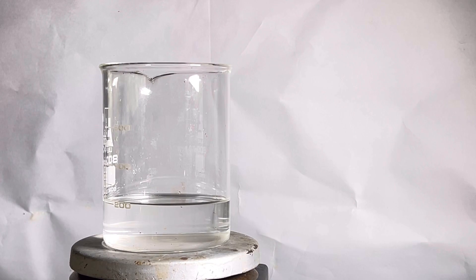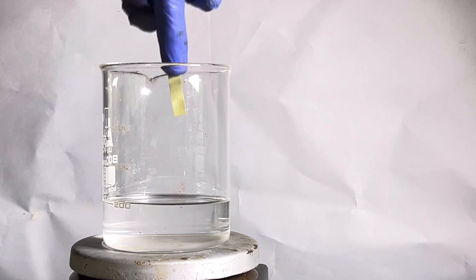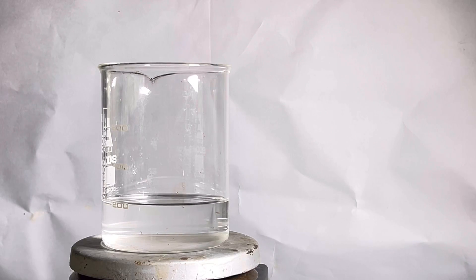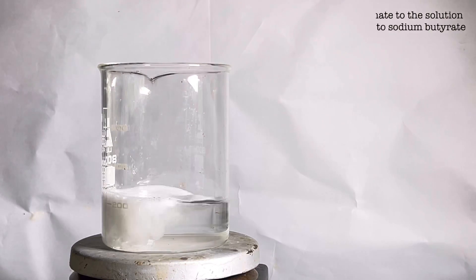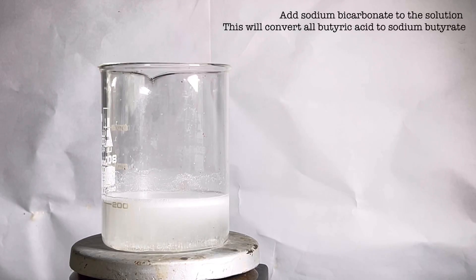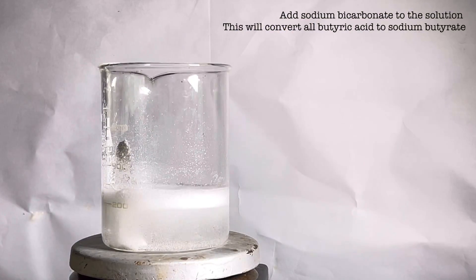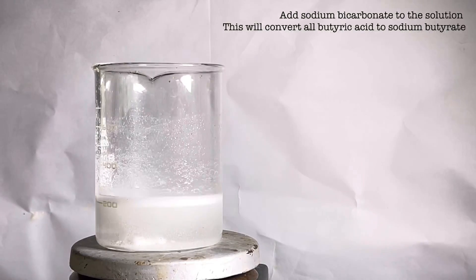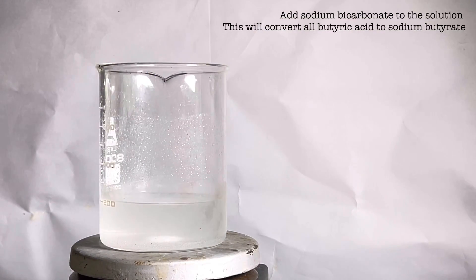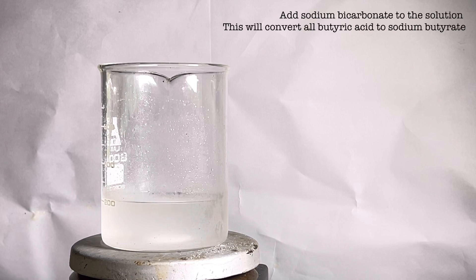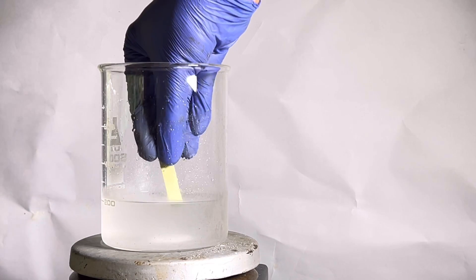Moving on with the synthesis of butyric acid we will take the aqueous part of the distillate in a beaker. A quick pH test was done and the acidic pH was confirmed. Next we will start adding sodium bicarbonate to the solution. Effervescence is seen as carbon dioxide is produced. What we are doing here is converting all the butyric acid to its sodium salt form sodium butyrate. Sodium butyrate is soluble in water and is insoluble in the solvent called ethyl acetate. Ethyl acetate is used to rinse the solution and extract out many side products and unreacted material from the solution. Finally when no more effervescence is seen pH was tested again and it was found to be alkaline.